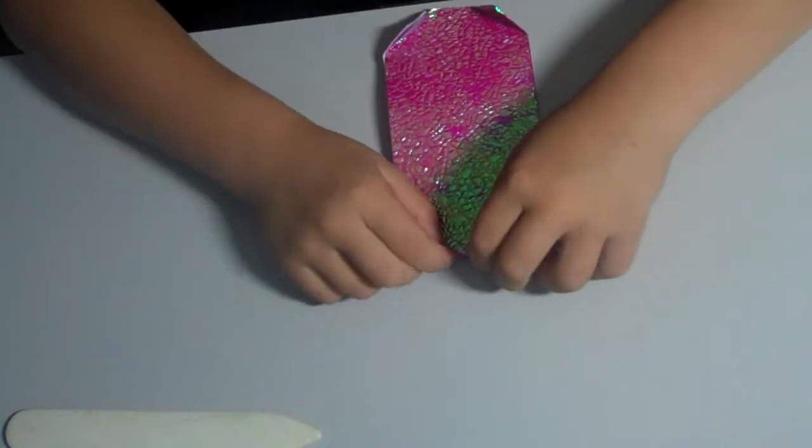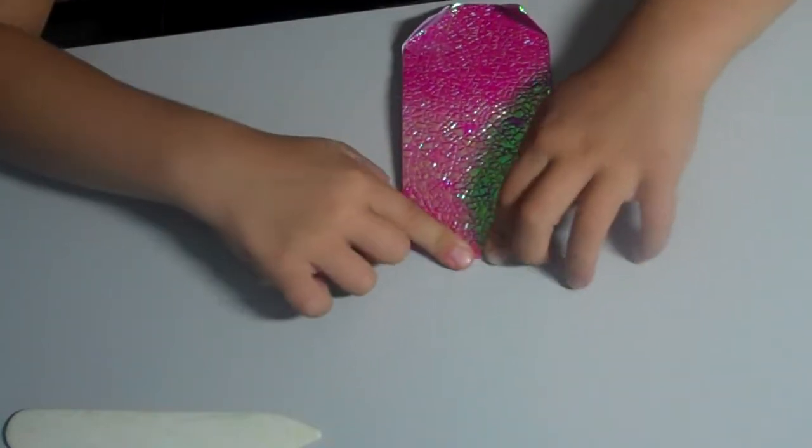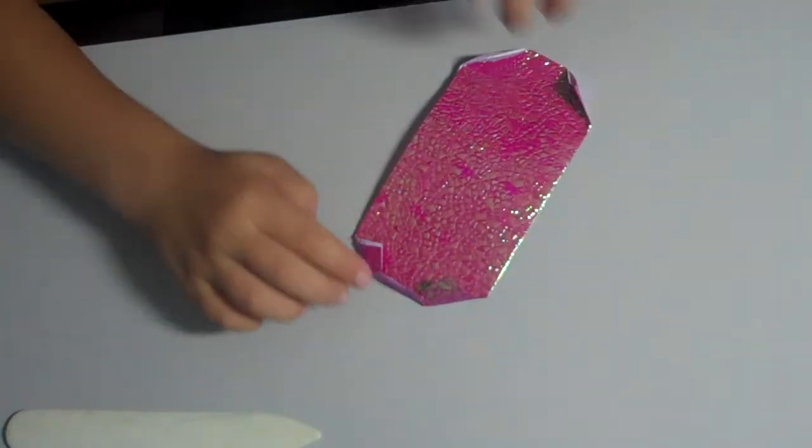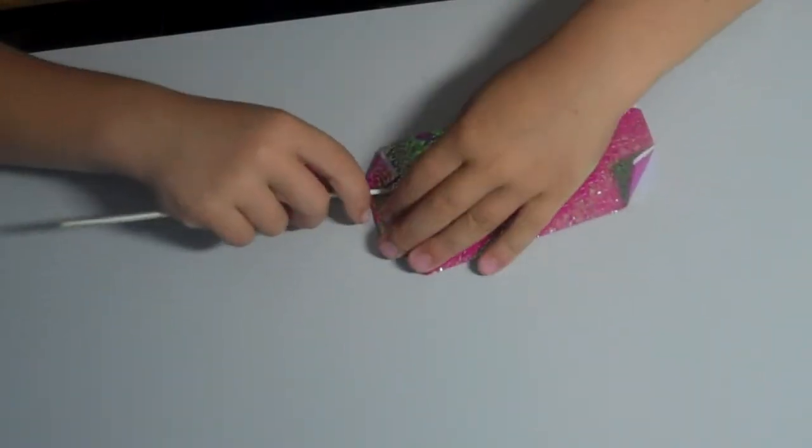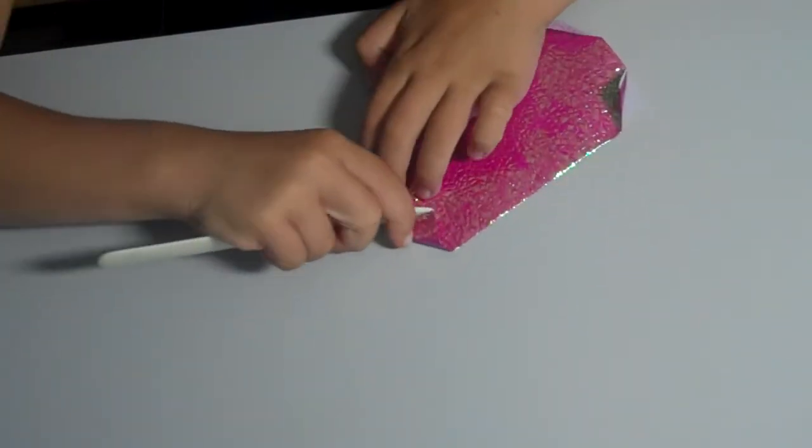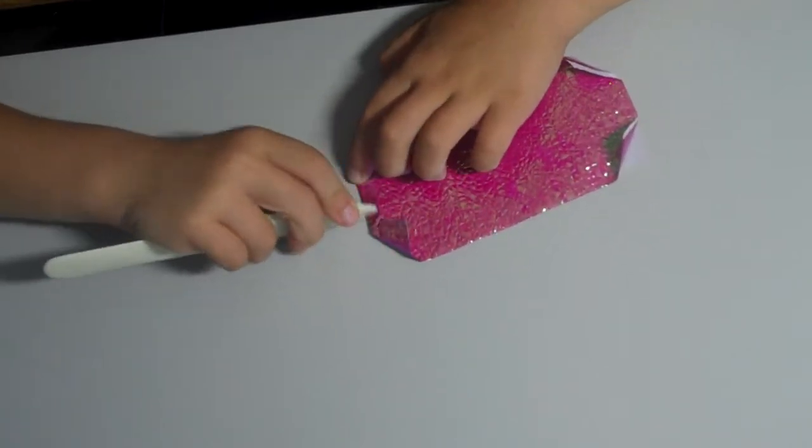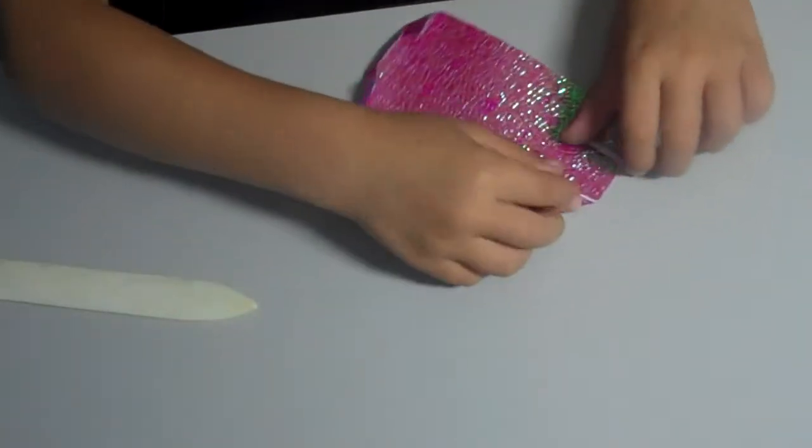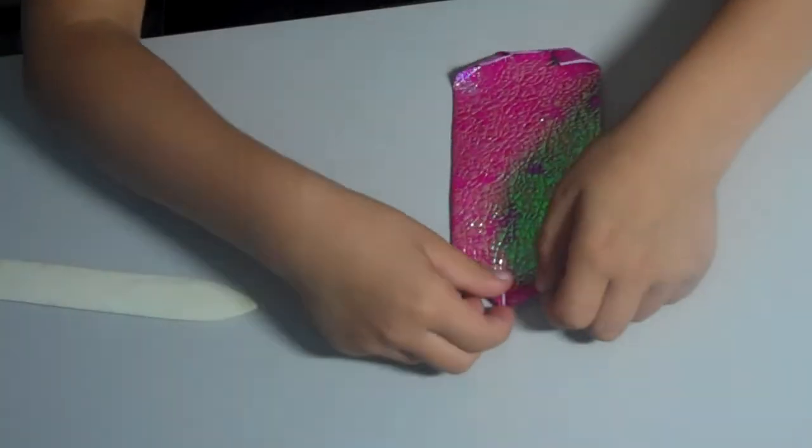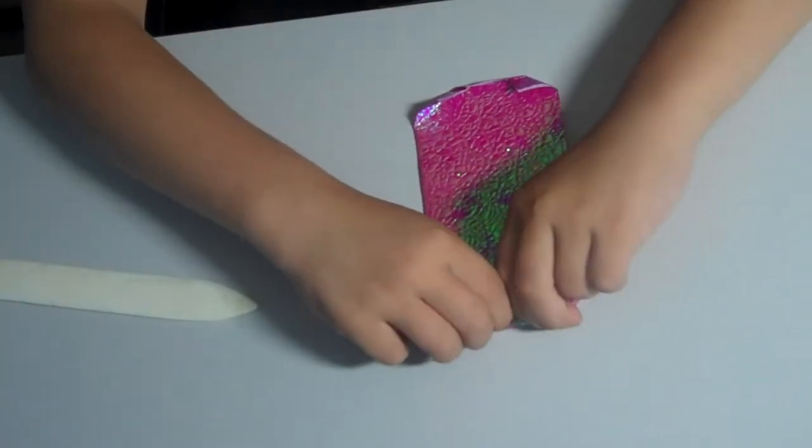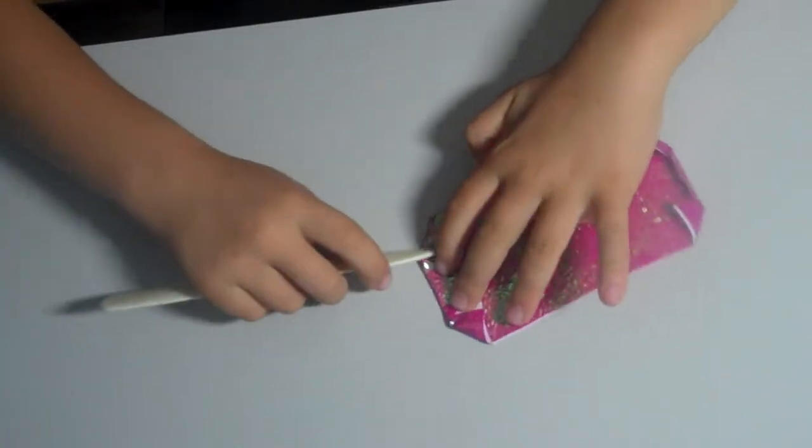Then you take this edge and fold it a little bit down like that. Then you might want to crease it really good. And then you fold this edge to here and then make another good crease.